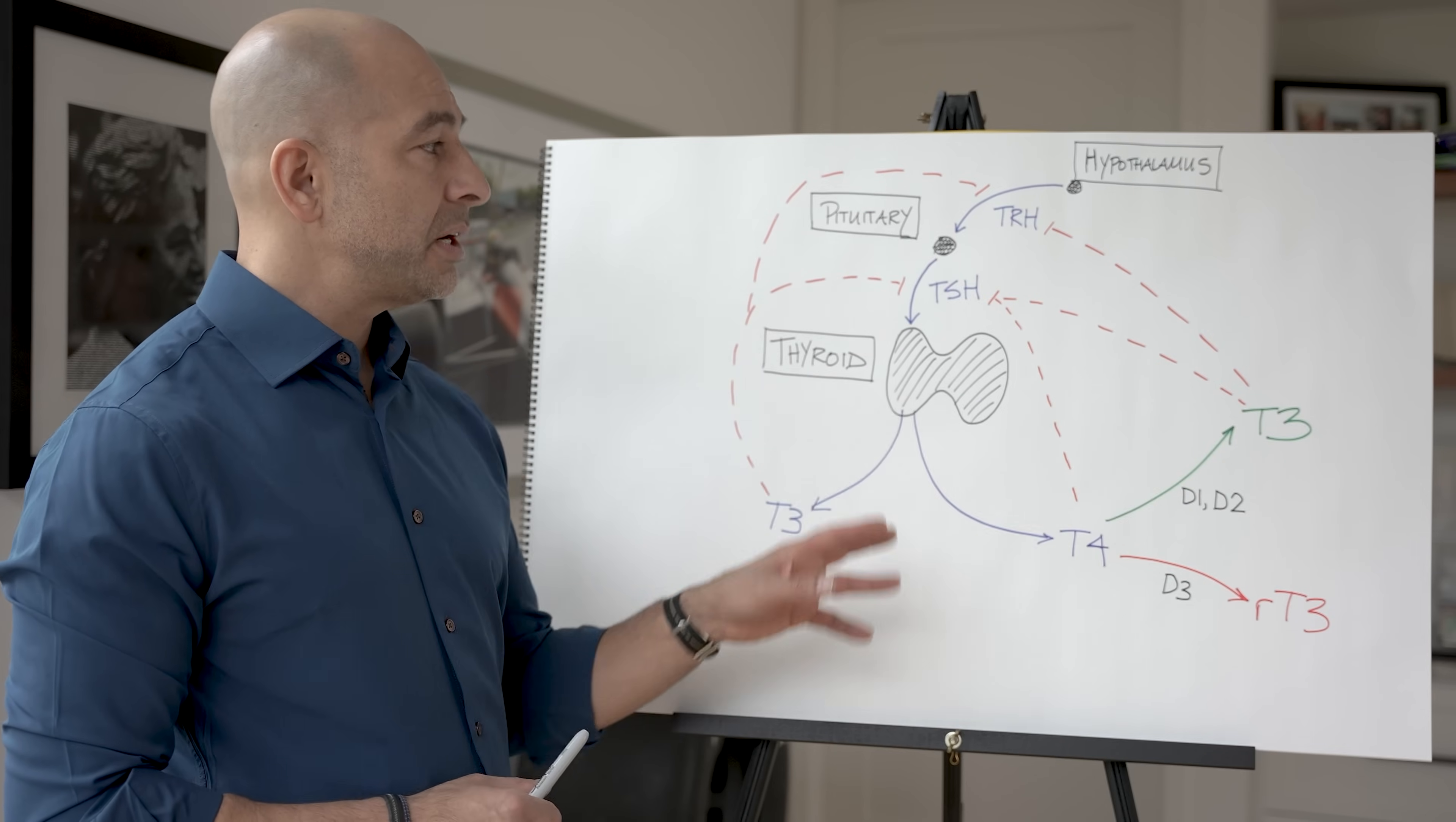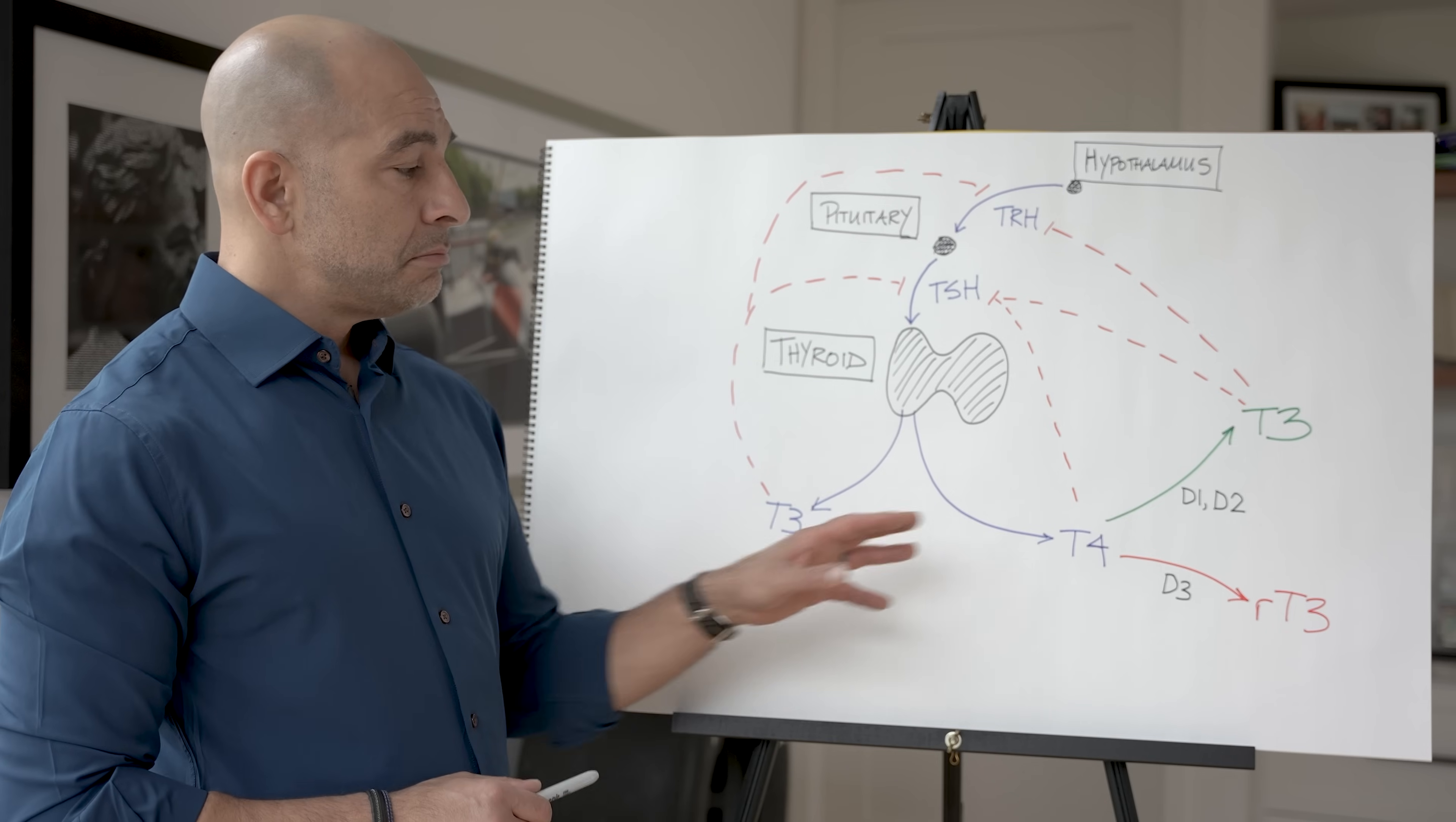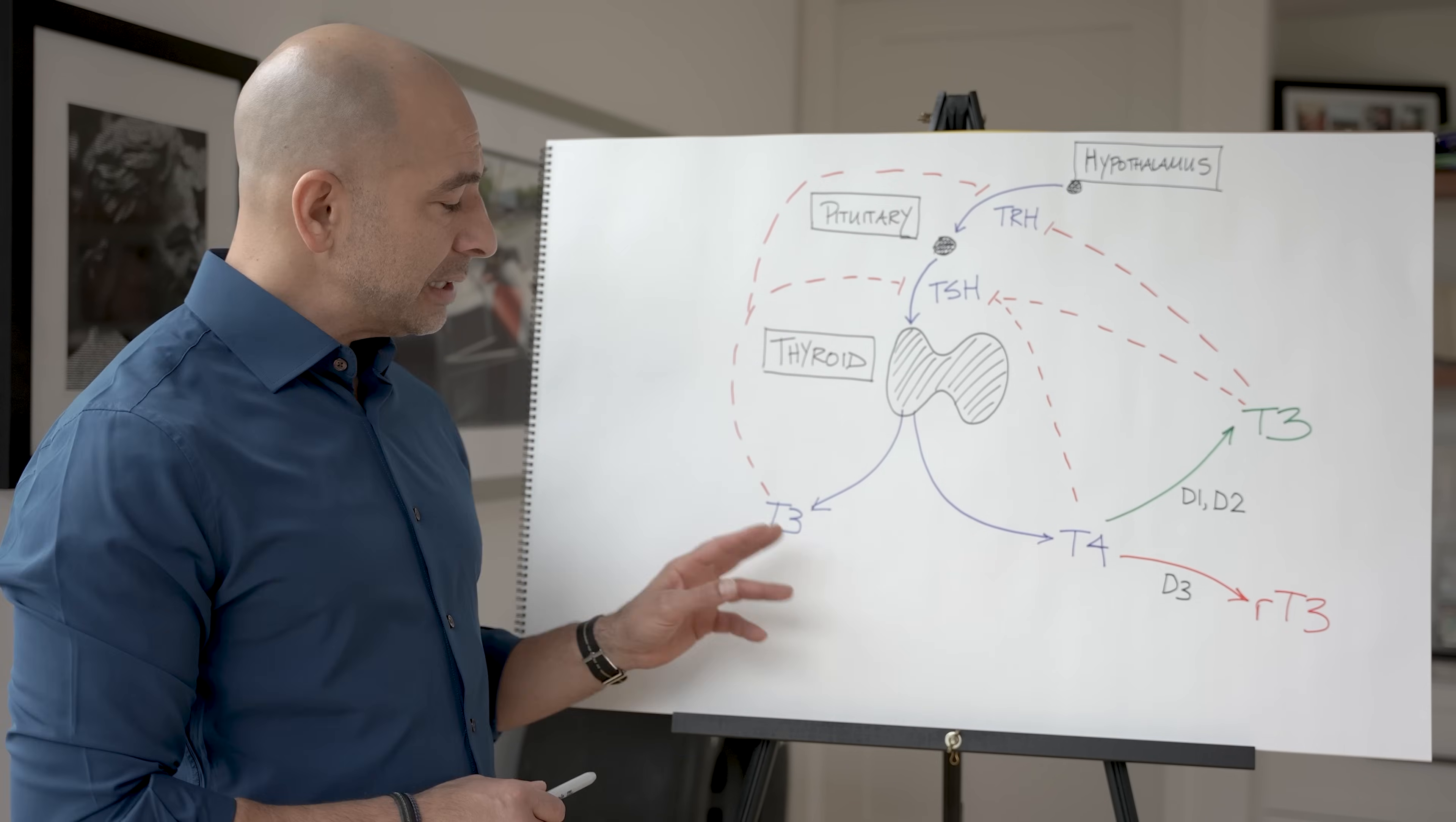Now, I'll come back to the regulation of these in a moment, but let's just go back to the thyroid gland. So the thyroid gland makes mostly T4 and a little bit of T3.